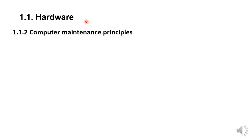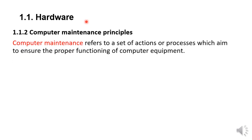We are going to see computer maintenance principles which are needed to take care of computer hardware. But before we start, let us define what computer maintenance is. Computer maintenance refers to a set of actions or a set of processes which aim to ensure the proper functioning of computer equipment. This means that we have different methods that we can use in order to keep computer hardware in good condition.